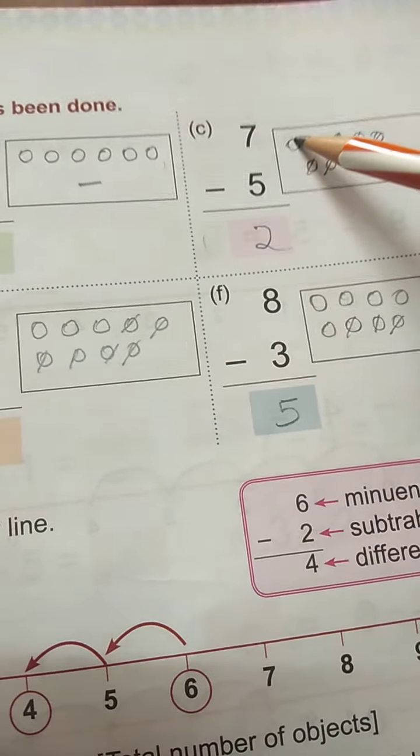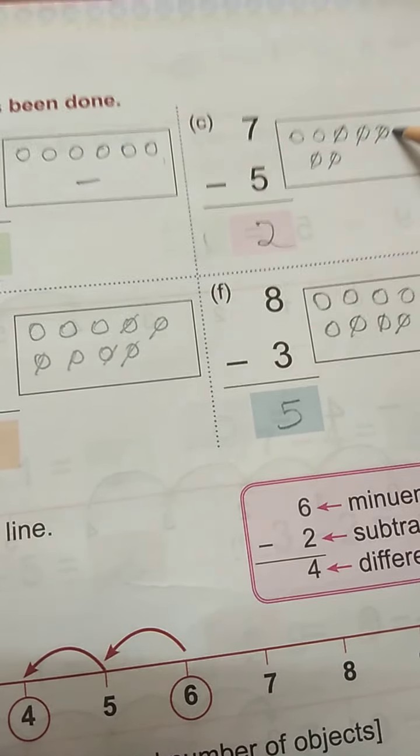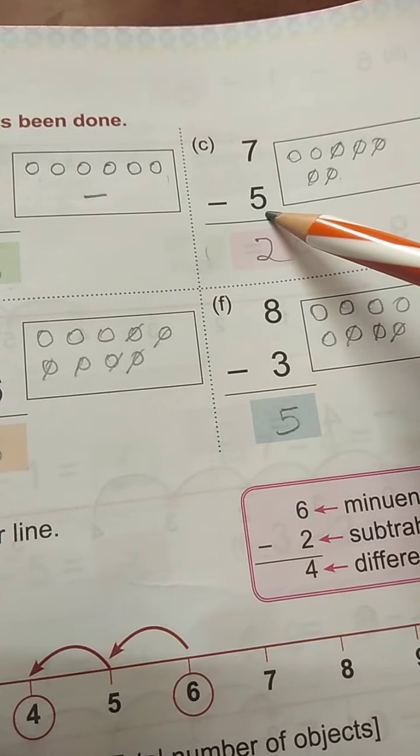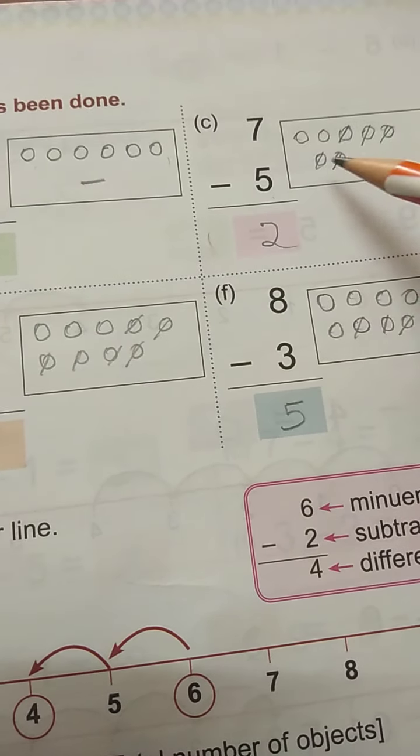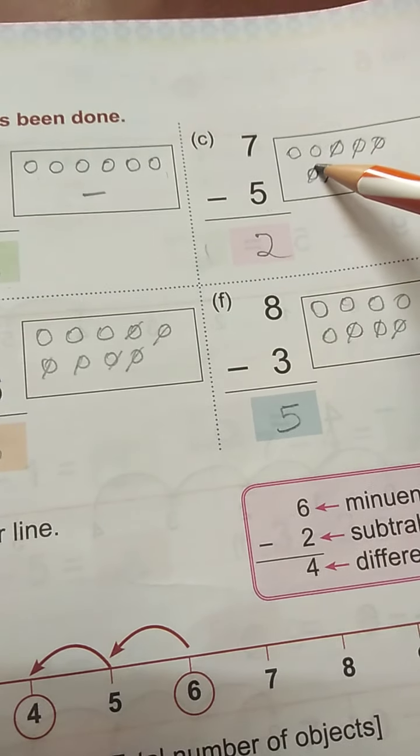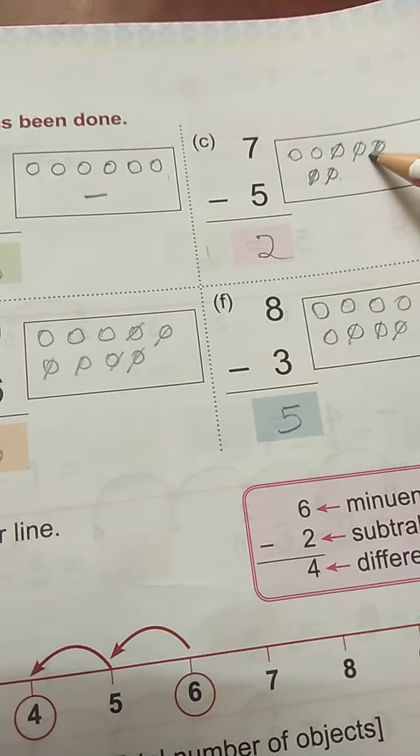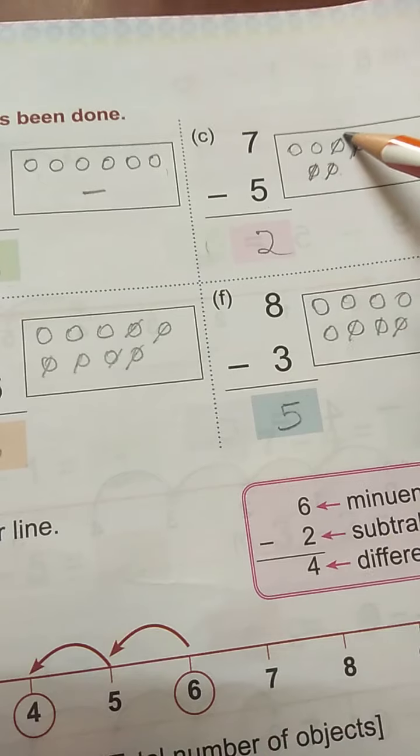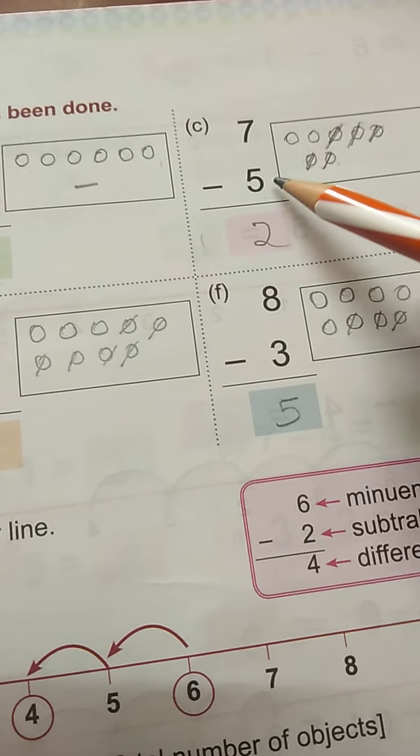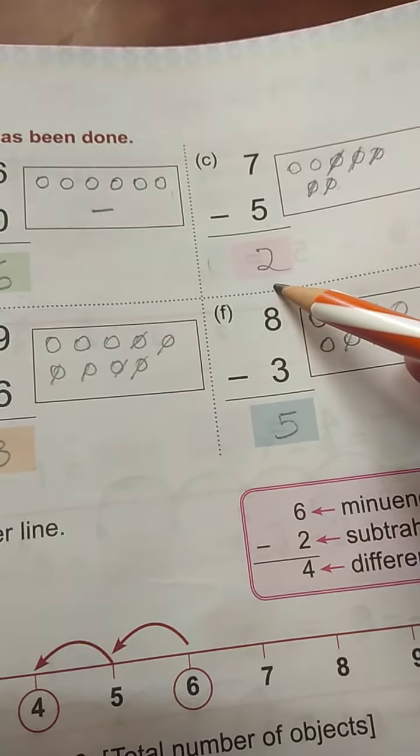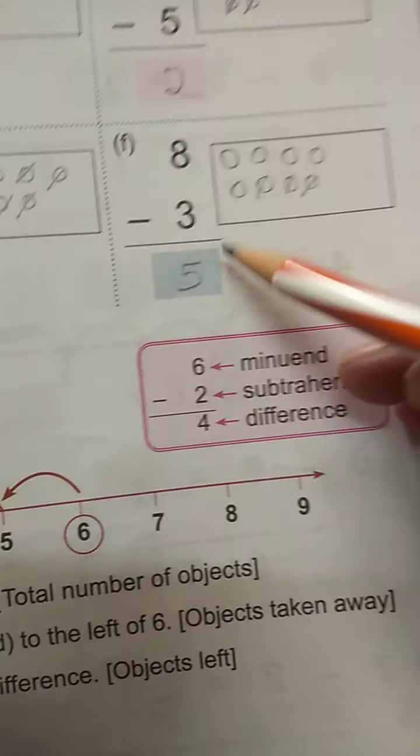Next, 7 dots. 1, 2, 3, 4, 5, 6, 7. So 2 dots are 5. 5. 1, 2, 3, 4, 5. So 2 will be 1, 2. So 2 will be there. The same way.